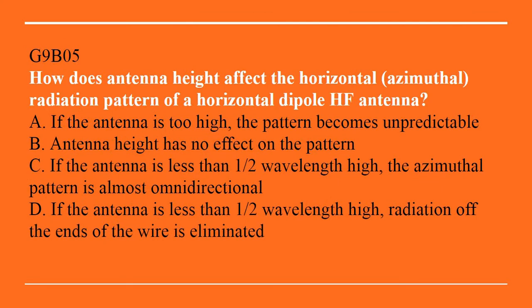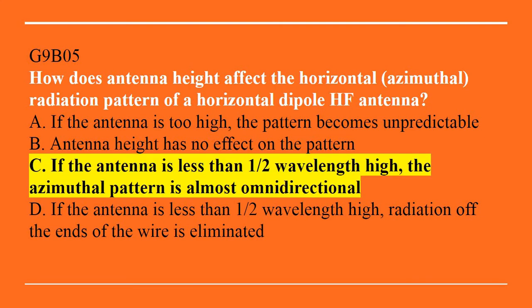G9B05: How does the antenna height affect the horizontal or azimuthal radiation pattern of a horizontal dipole HF antenna? A. If the antenna is too high, the pattern becomes unpredictable. B. Antenna height has no effect on the pattern. C. If the antenna is less than half-wavelength high, the azimuthal pattern is almost omnidirectional. Or D. If the antenna is less than half-wavelength high, radiation off the ends of the wire is eliminated. The answer is C — if the antenna is less than half-wavelength high, the azimuthal pattern is almost omnidirectional.